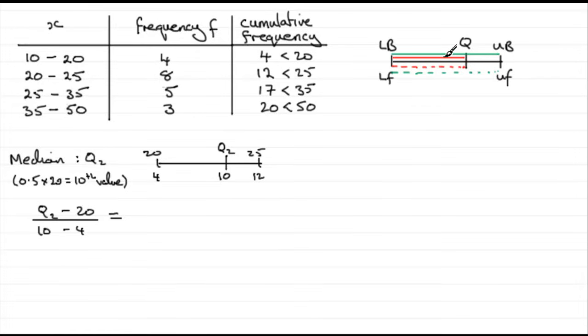And then that's going to be equal to, comparing this solid green width here, the upper bound minus the lower bound, 25 take away 20. And compare that with the width below, 12 minus 4. And there's your equation.